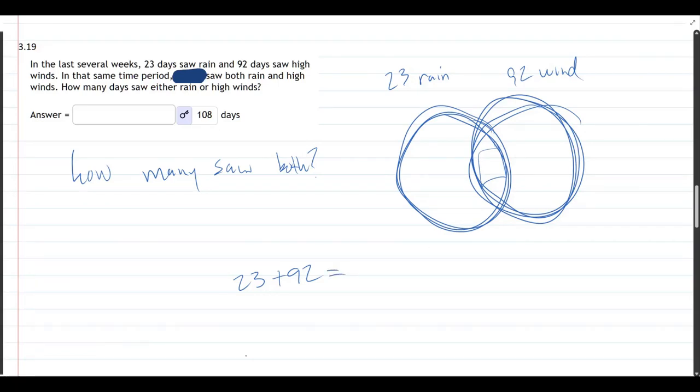So, 23 and 92 is 115. Alright. This is 115, but we double counted the middle.